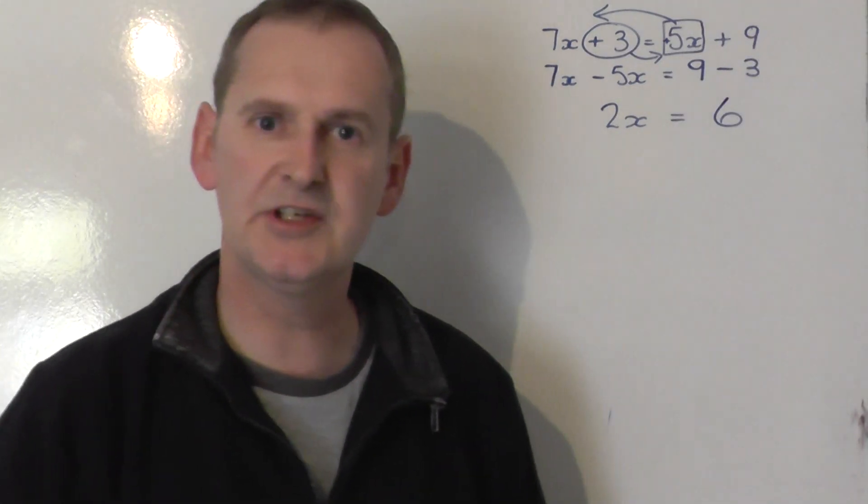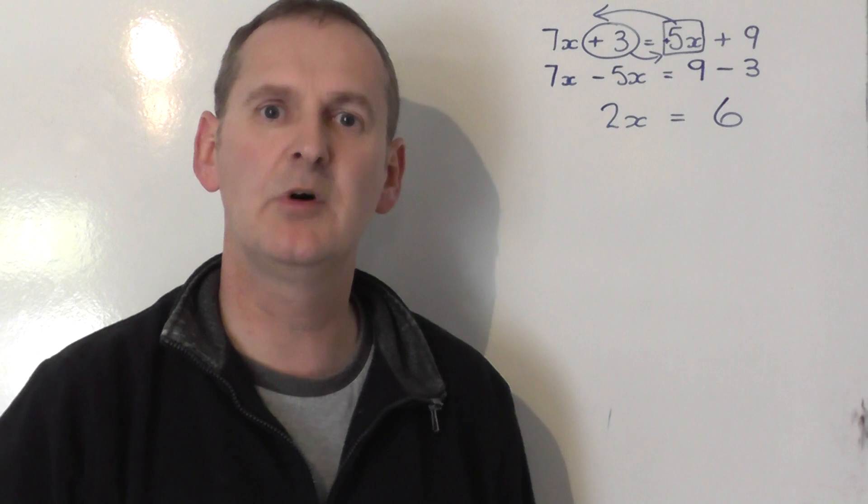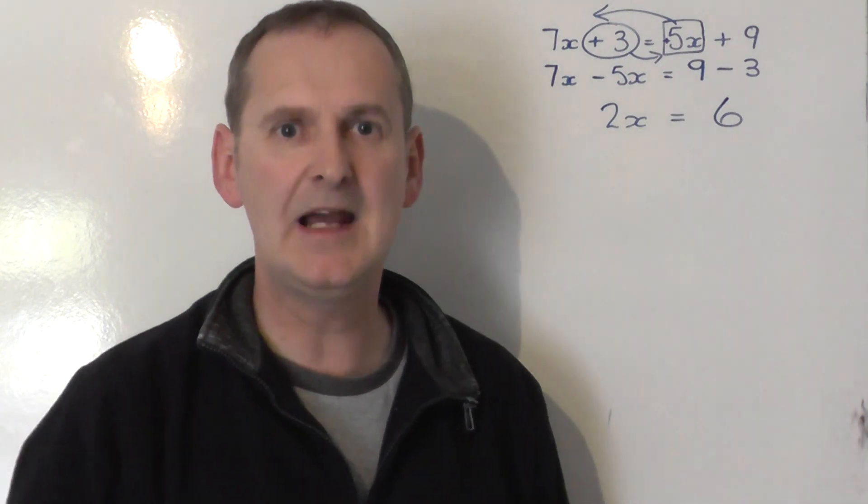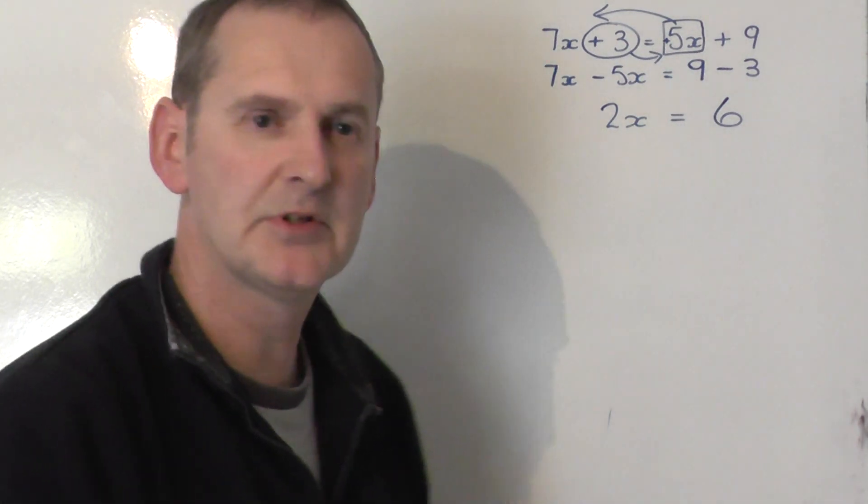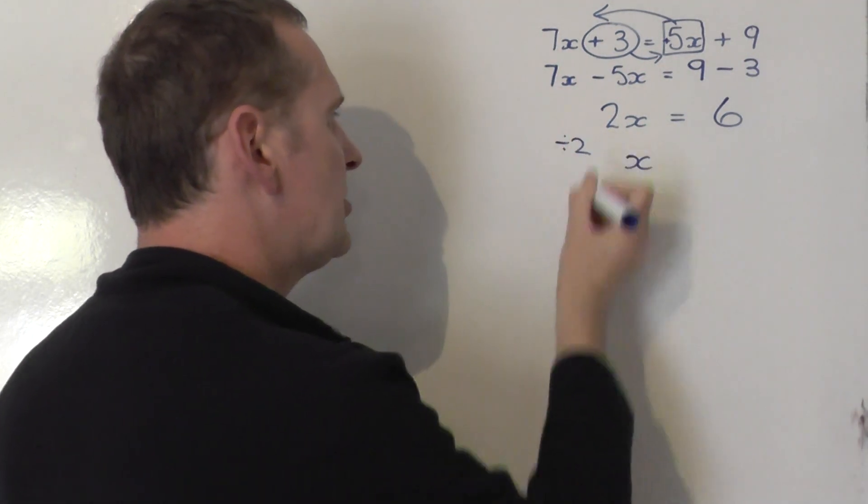We haven't finished, though, because this just simply gives us that 2x's are equal to 6. I want to know what x is. So, we now have to change the 2x into a single x, or 1x. And to do that, we simply share it by 2.